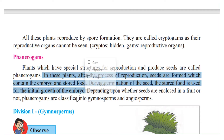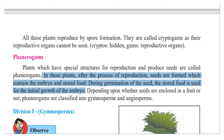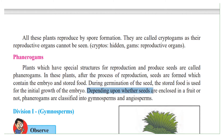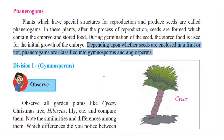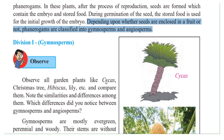So when the plant starts growing, the stored food is used for its initial growth. Now depending upon whether the seeds are enclosed in the fruit — that is, they are inside the fruit or not — Phanerogams are classified into gymnosperms and angiosperms.